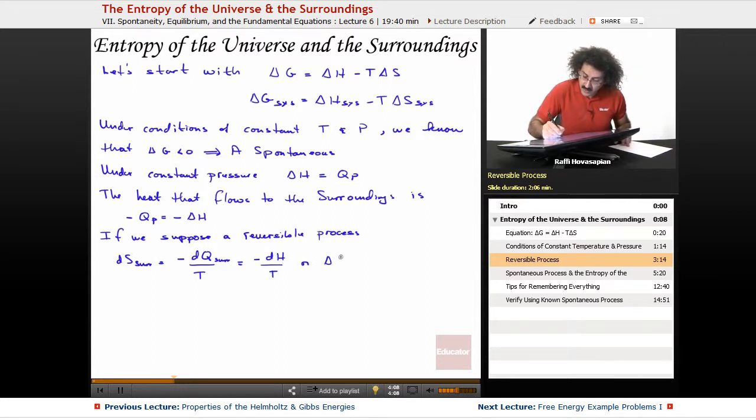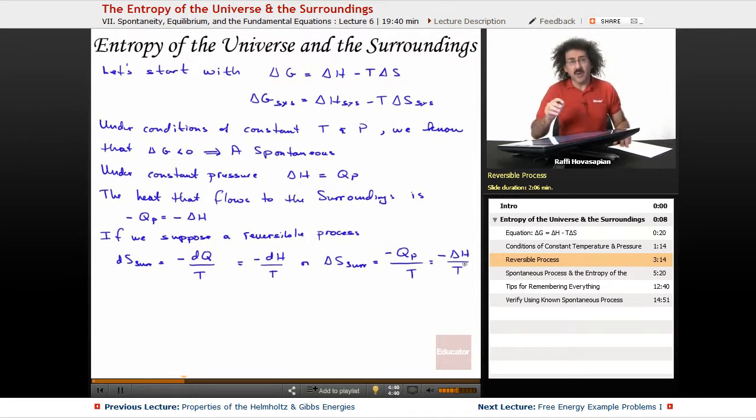Or we can write it in terms of the finite difference: delta S of the surroundings is equal to minus Q sub p over T equals minus the delta H over T.